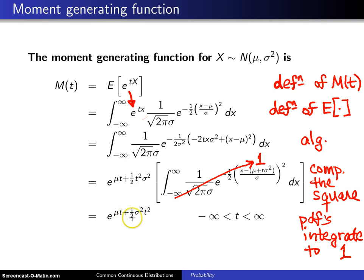E to the mu t plus one-half sigma squared t squared for any t value between negative infinity and positive infinity. This is the moment-generating function of a normal random variable.